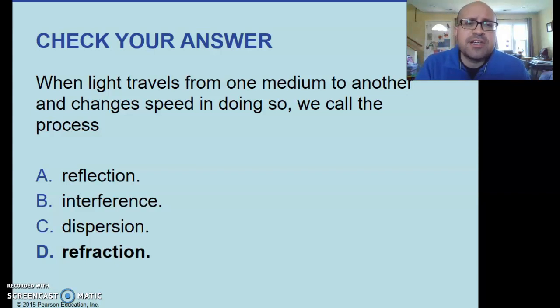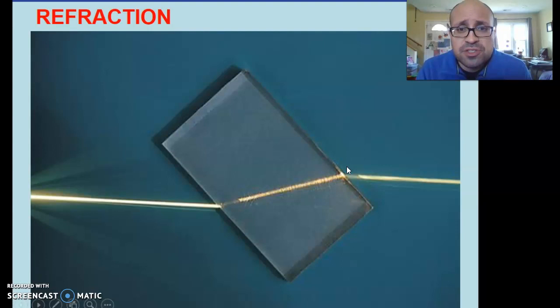That's what's going to take place here in today's lesson. Let's take a look at some pictures. This is a really cool picture. You can see the light is coming in. We're in the air. When the light hits the glass, it bends. And then when it goes back into the air, it bends again. And this is reminiscent of an experiment that we do in physics.